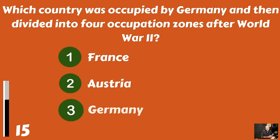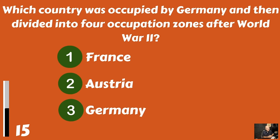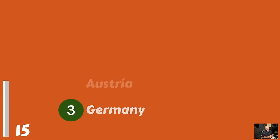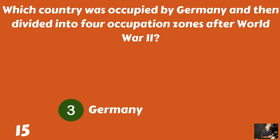Which country was occupied by Germany and then divided into four occupation zones after World War II? Was it France? Austria? Or Germany? And that was Germany.